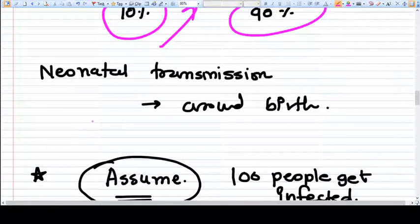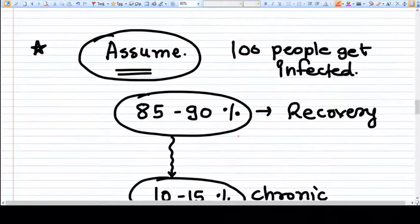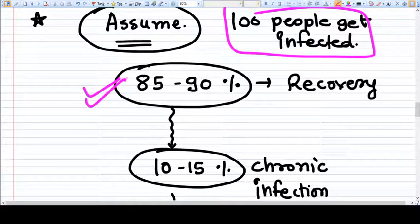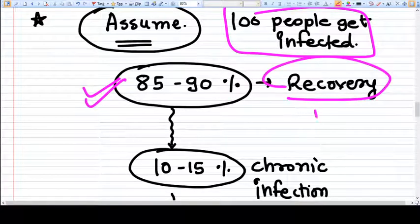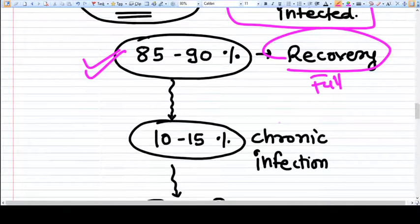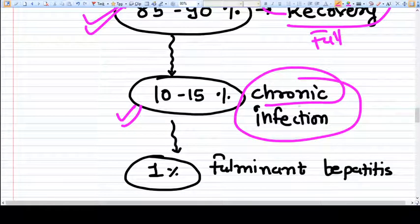Neonatal transmission can also occur around birth with secretions. Now, what happens with hepatitis B virus exposure? Assume that 100 people get infected with HBV. 85 to 90% of patients achieve full recovery—they are fully recovered from the virus, no chronic state, no active state. But 10 to 15% have chronic infection, and these patients will develop cirrhosis and hepatic carcinoma in their later life. 1% of cases have fulminant hepatitis, and that is very severe.